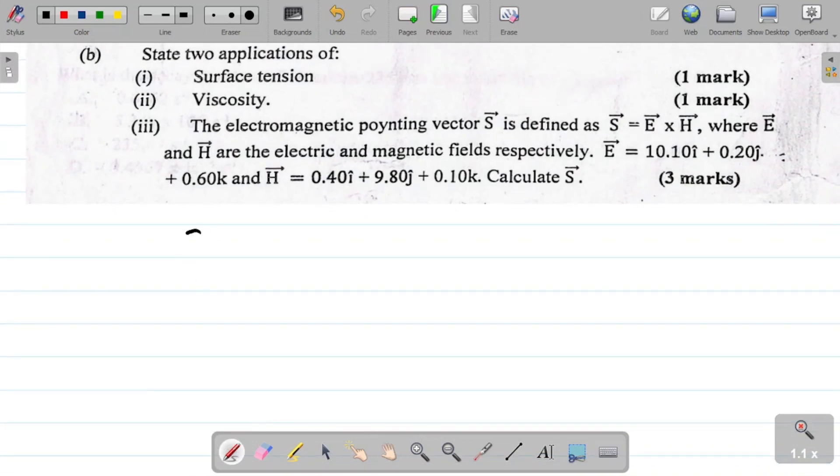For this we have that S, the vector S, is equal to vector E cross vector H. So that means for us to get the value of S we simply need to do E cross H. So how do we do E cross H?